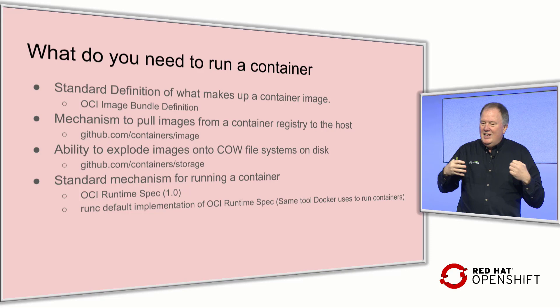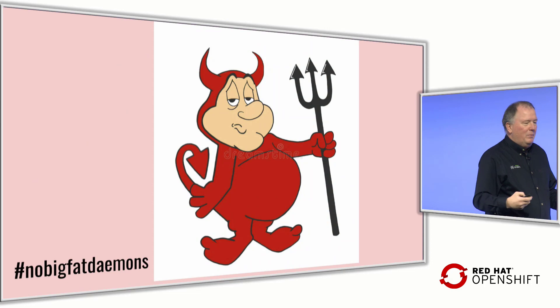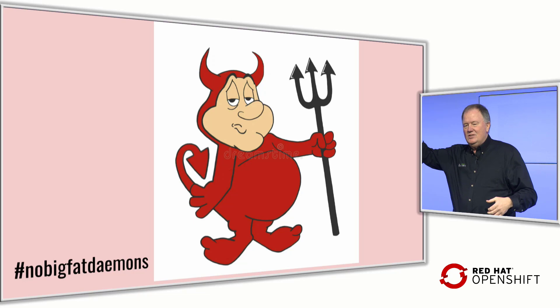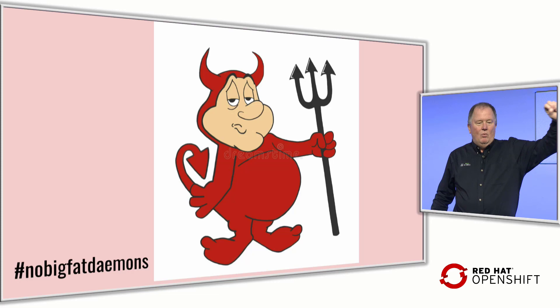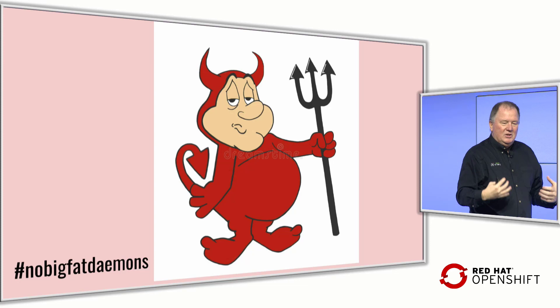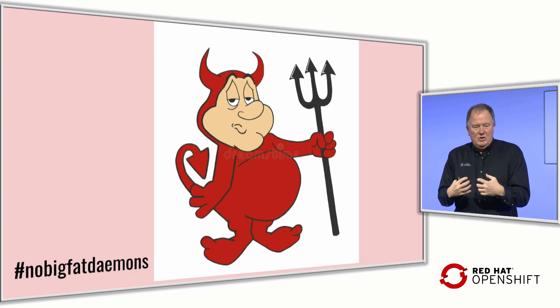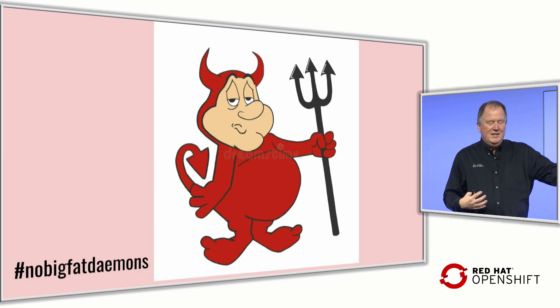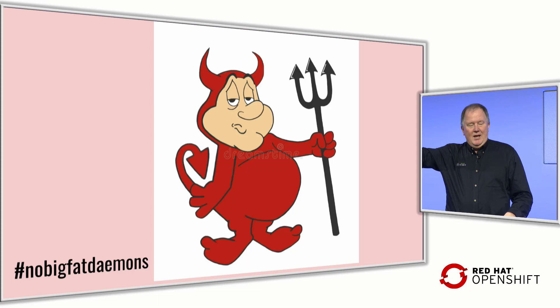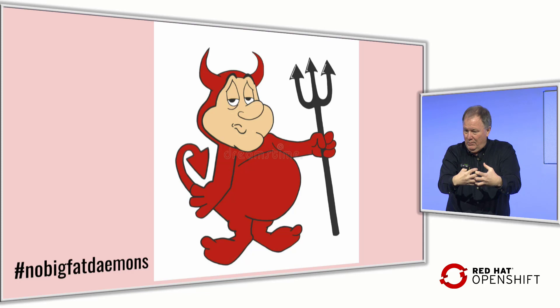The key thing to understand is there's no requirement for a big fat container daemon to do any of this. Everything has been standardized — Docker.io, Quay.io, registries.redhat.access.com — they've all been standardized. The problem with a daemon is that all different use cases end up going through a common denominator, and you end up with the least common denominator of security. If you use one daemon for running containers in production, building containers, and playing with containers, how do you set the right default security for each case?